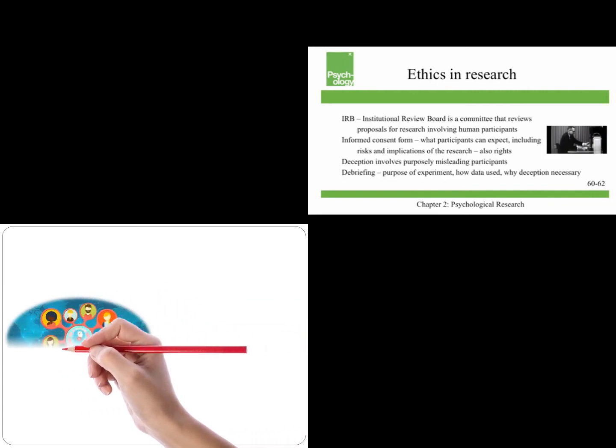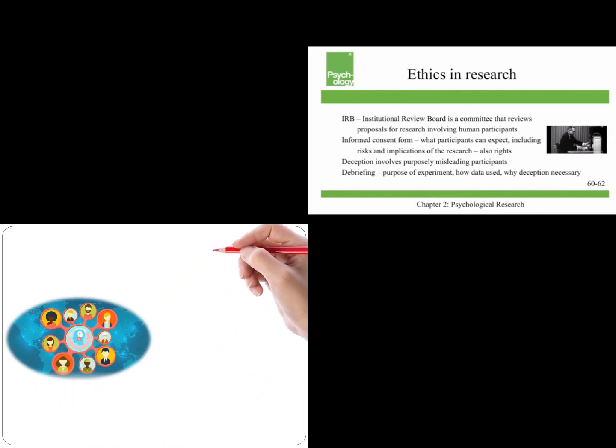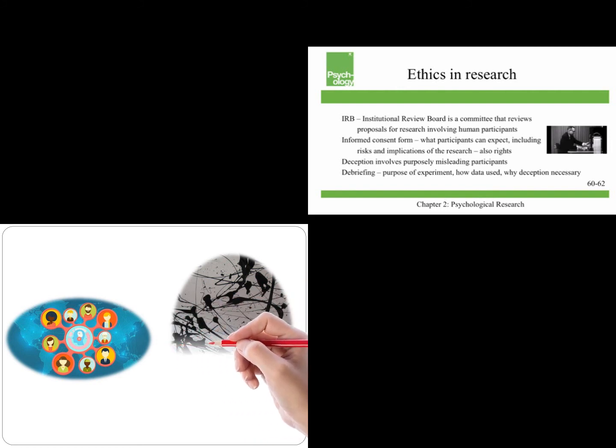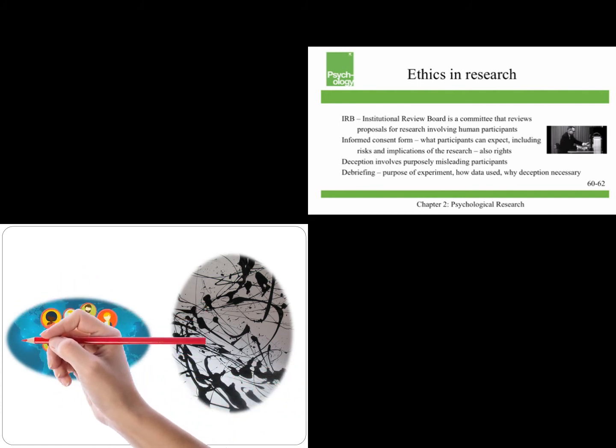Let's talk about ethics in research. An IRB is an Institutional Review Board, and that's a committee that reviews proposals for research involving human participants. You'll have to sign an informed consent form, and that tells you what participants can expect, including the risks and implications of the research. And you're also informed of your rights, such as the fact that your participation is completely voluntary and that you're free to withdraw from the study at any time.